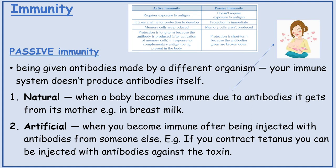Like if you contract tetanus, you can be injected with antibodies against the toxin. Differences between active and passive: active requires exposure to antigens, but passive doesn't. Active immunity takes a while for the protection to develop, but passive immunity gives immediate protection because you get the actual antibodies.